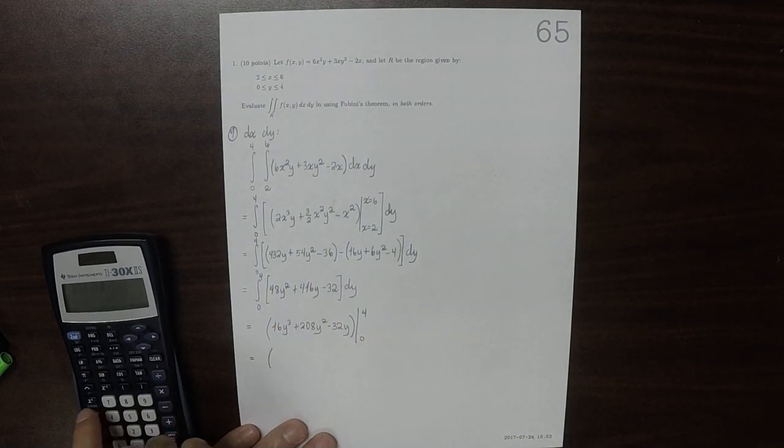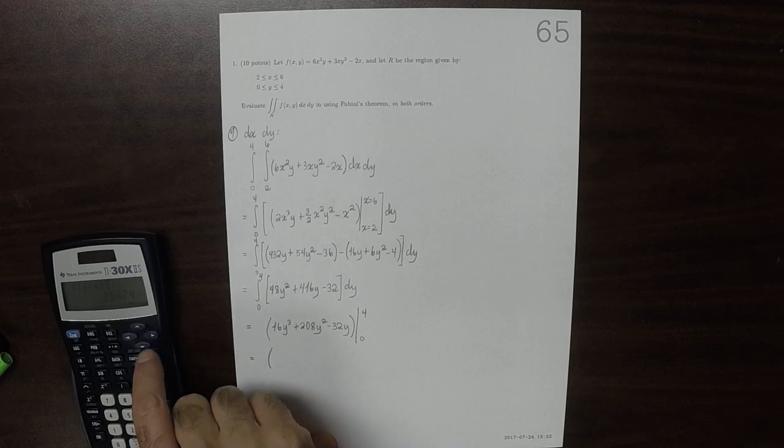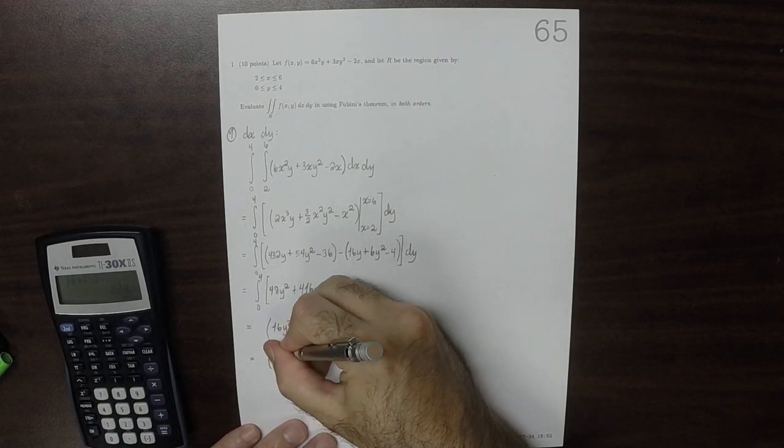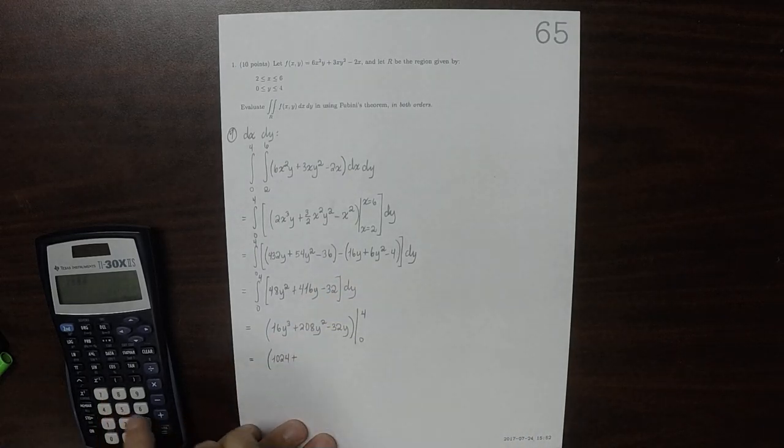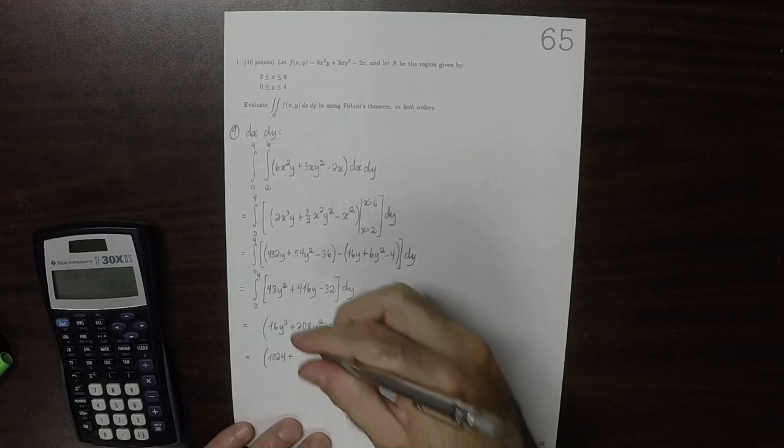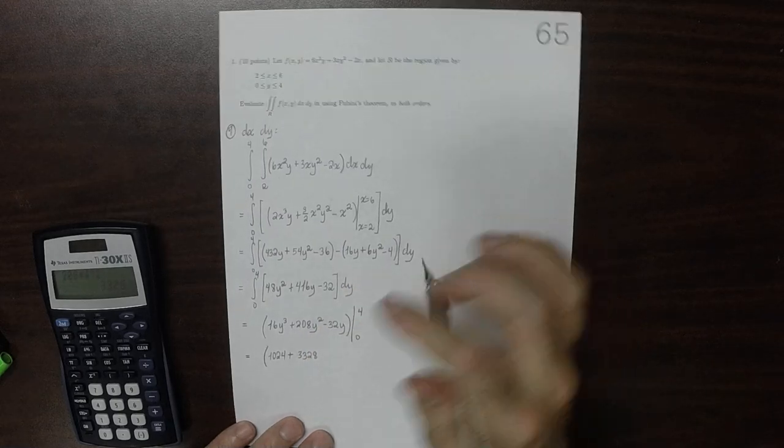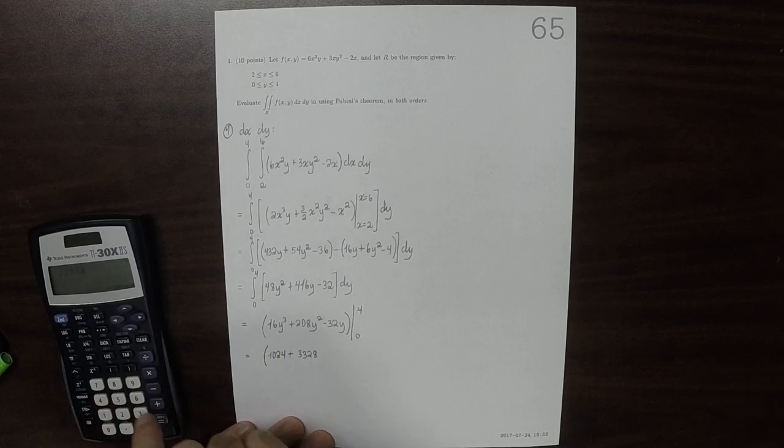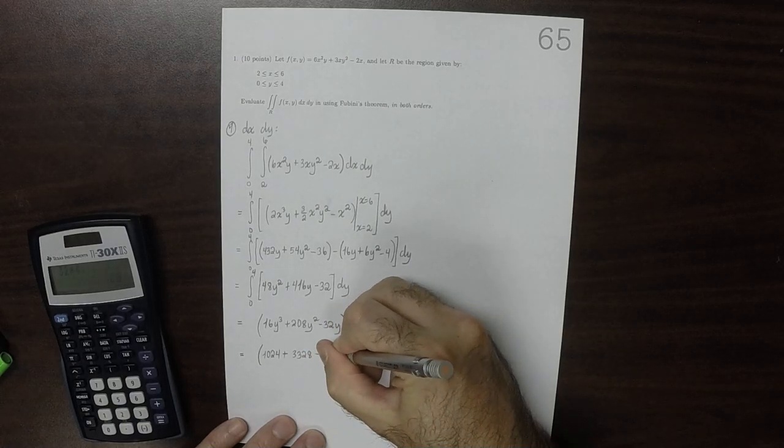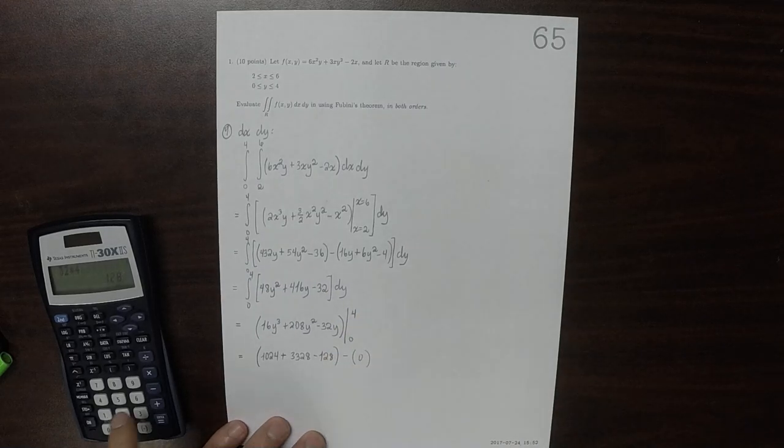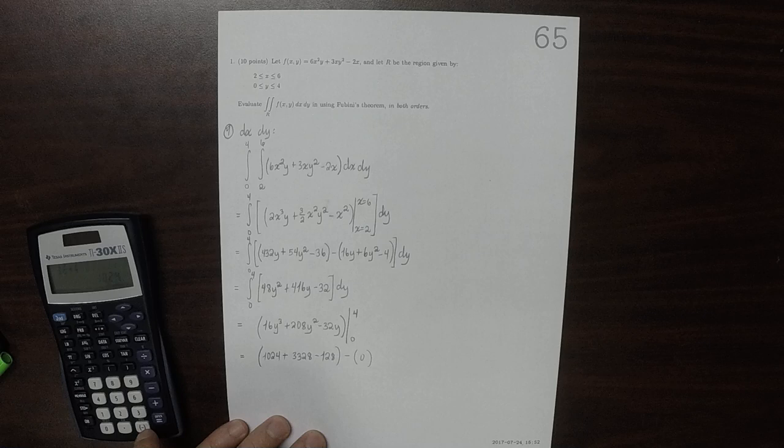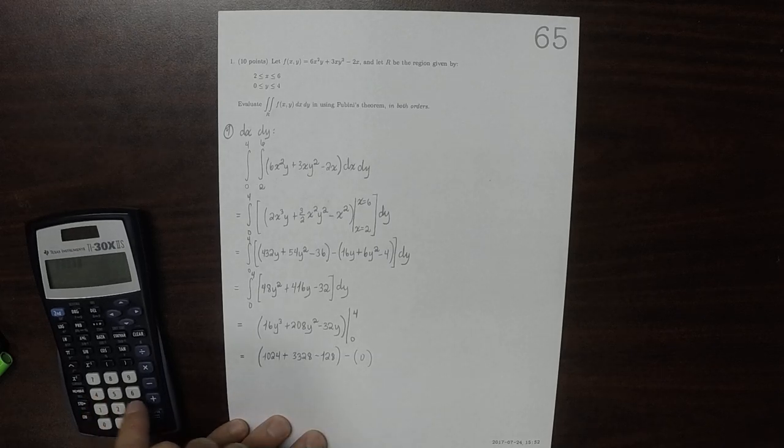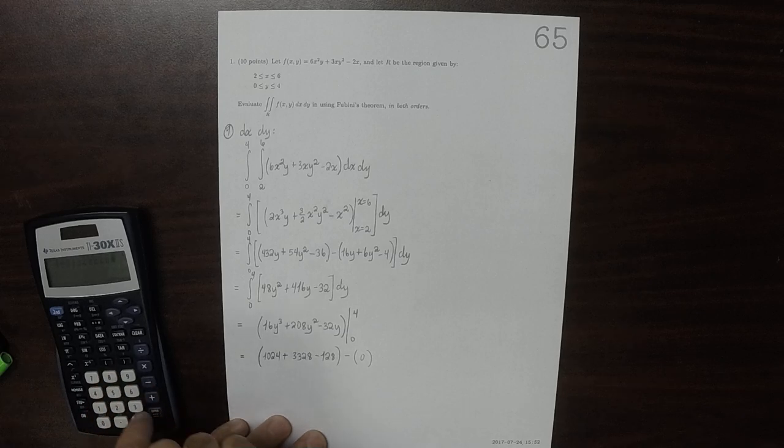So 16 times 4 cubed, 1024, plus 208 times 4 squared, 3328, minus 32 times 4, 128, and then minus 0, all that stuff is 0. Let's check that real quick. Good. So adding those together, 4424.